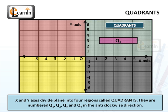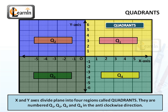They are numbered as Q1, Q2, Q3, and Q4 as shown in the diagram in the anticlockwise direction.